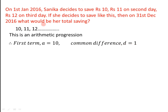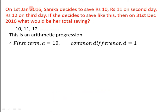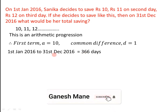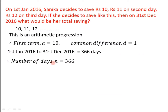Now, to find her total savings in a year, we have to find out how many days are there in that particular year. The year is 2016, which is a leap year. We know that in a leap year there are 366 days. So from 1st January 2016 to 31st December 2016, there are 366 days. If it were not a leap year, the total number of days would be 365. But as 2016 is a leap year, the total number of days N is equal to 366.